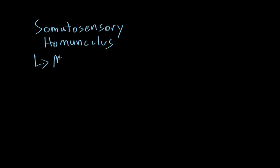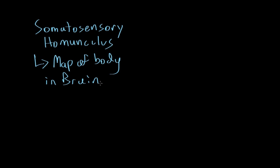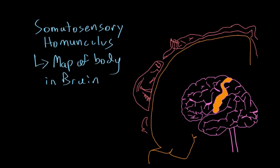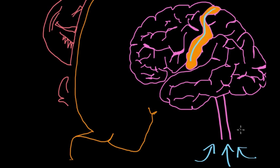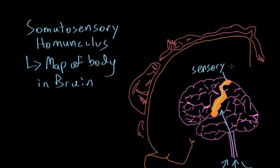The somatosensory homunculus is basically a map of your body in your brain. What I've drawn here is a picture of the brain. Let's focus on this pink area — this pink area is known as the cortex, and this region shaded in orange is a specialized part of your brain that receives sensory input from your entire body. Whenever you feel pain or heat anywhere in your body, all this information is sent through the spinal cord into the brain, and it ends up in this one part of the cortex, known as the sensory strip.